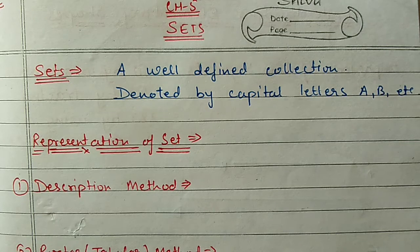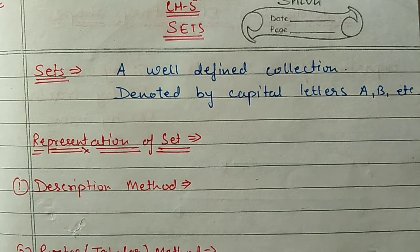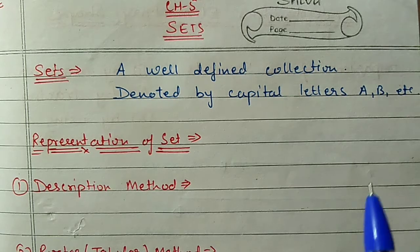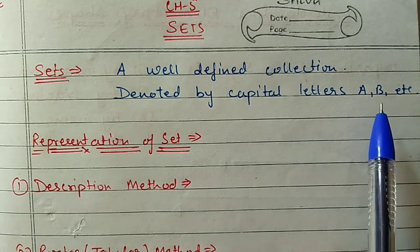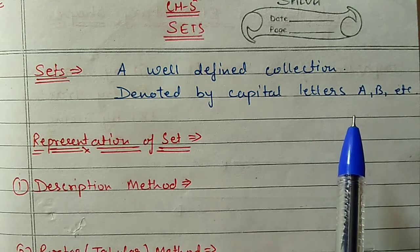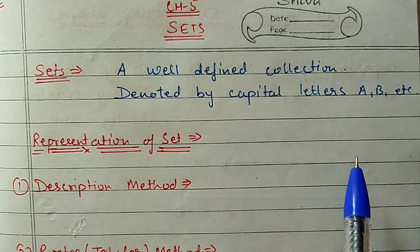Hello students, we are doing chapter number 5 - Sets. Today we will start Exercise 5.2, but before that we will discuss what we have done in the last exercise. So in the last exercise we discussed about the set. A set is a well-defined collection, always denoted by capital letters of the English alphabet, and we have three ways to represent a set.